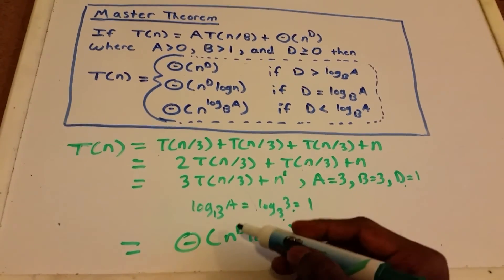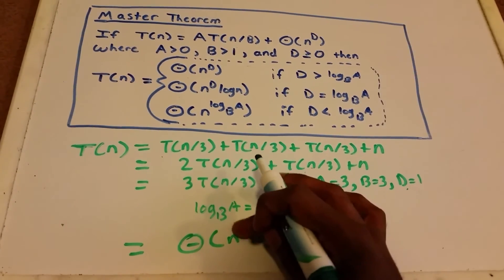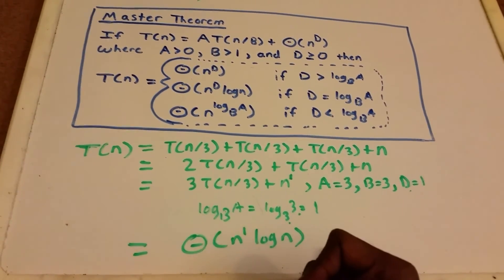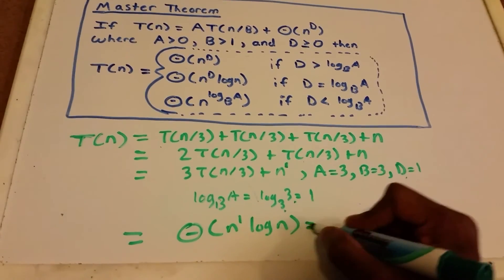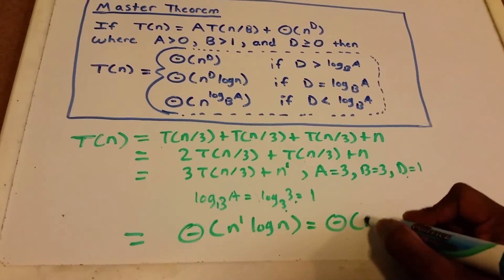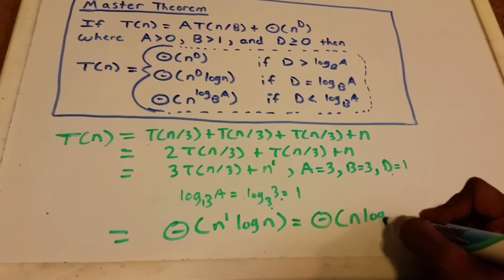Since d = 1, we can rewrite this as Θ(n log n).